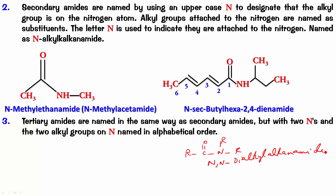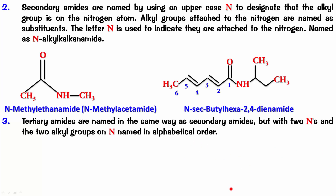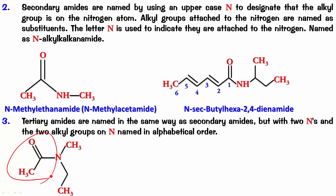That applies when the two R groups are the same. For this example, ethyl and methyl are both on N. Ethyl comes before methyl alphabetically, so it is N-ethyl-N-methyl-ethanamide.